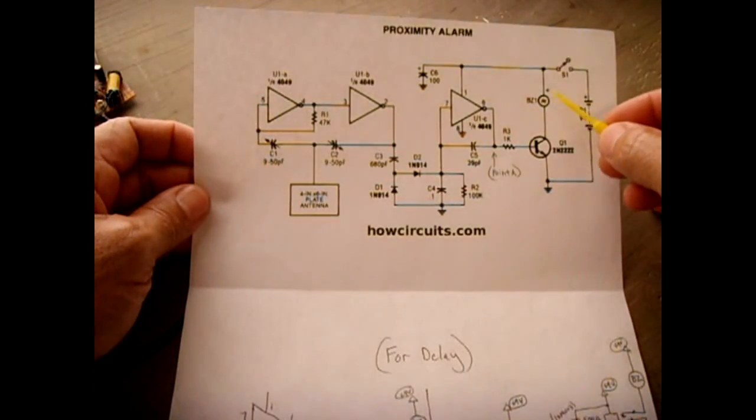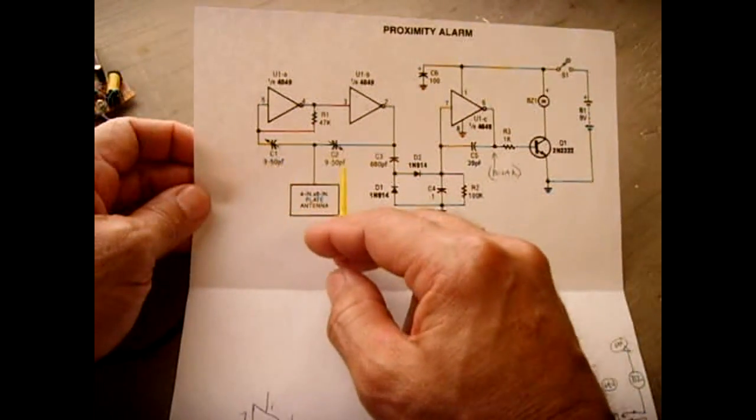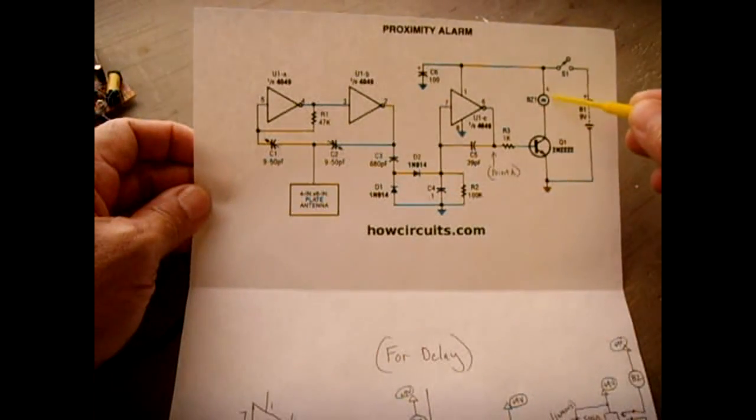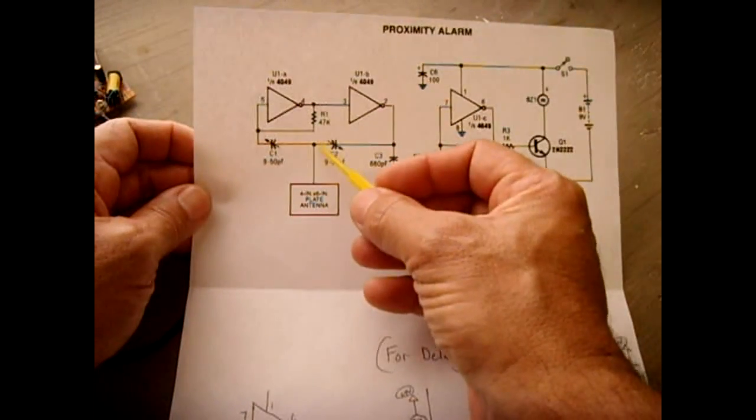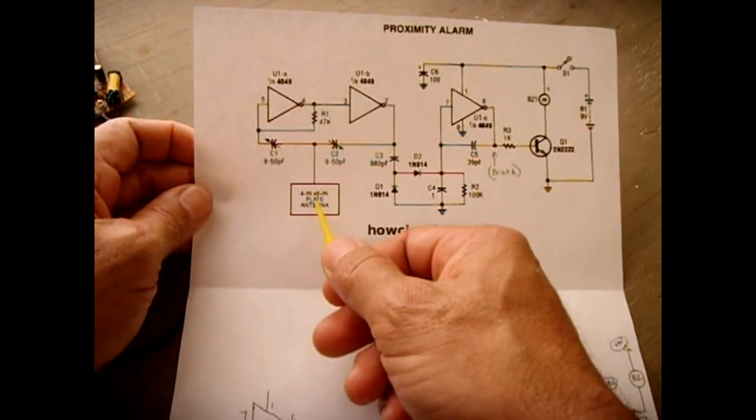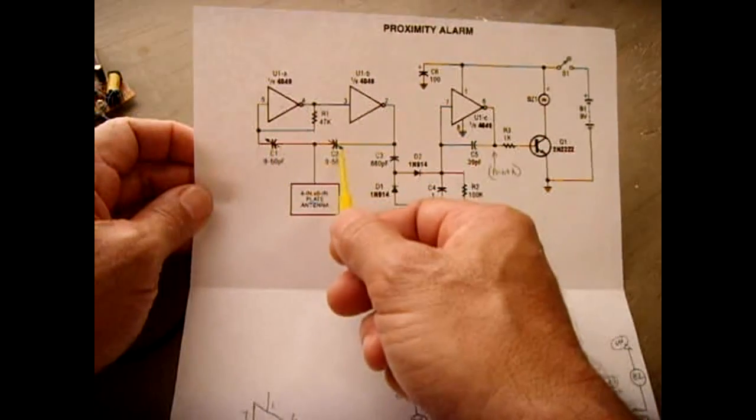When the buzzer is not sounding, that means the circuit is in balance. You adjust these trimmers until the buzzer no longer sounds. The metallic plate comes off the junction of the two trimmer capacitors. When your hand is brought close to this plate, you upset the balance.